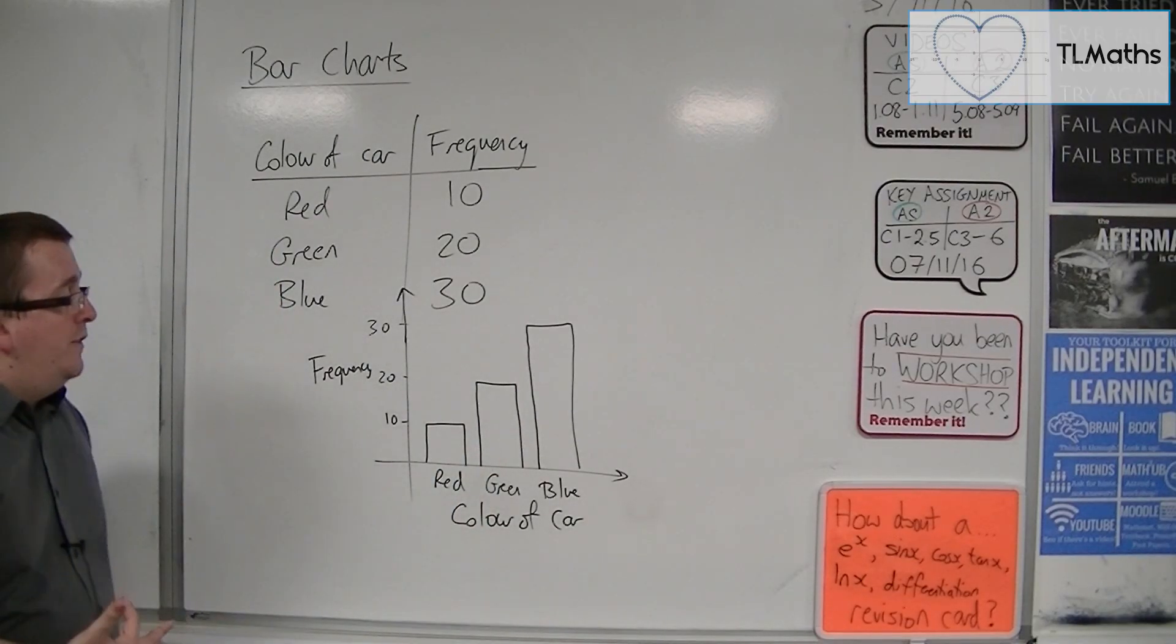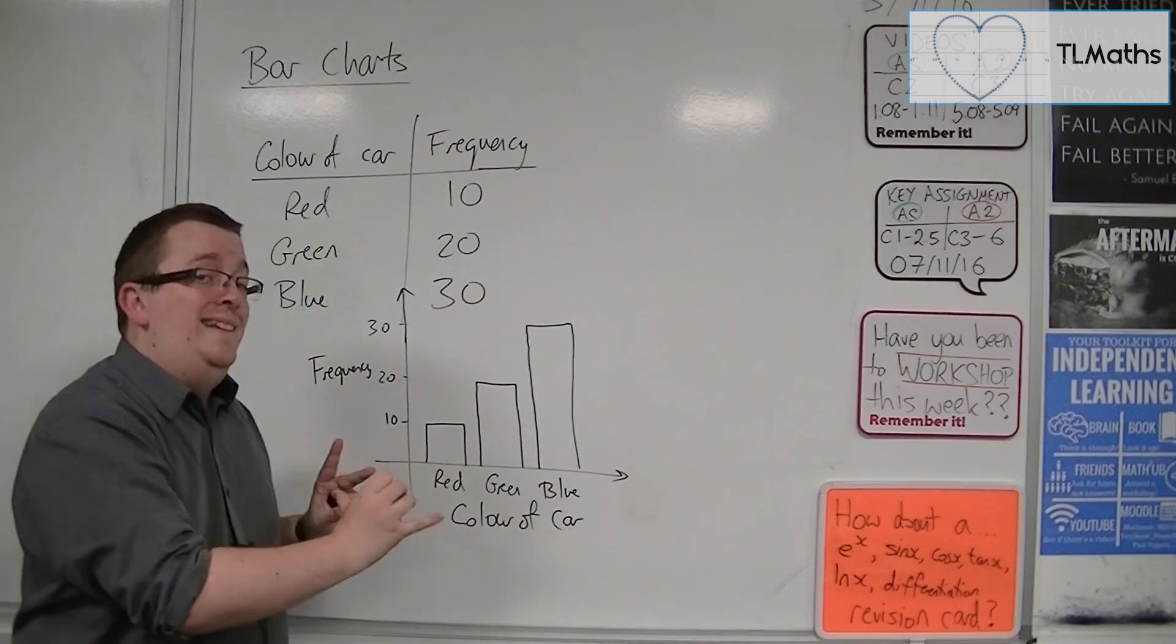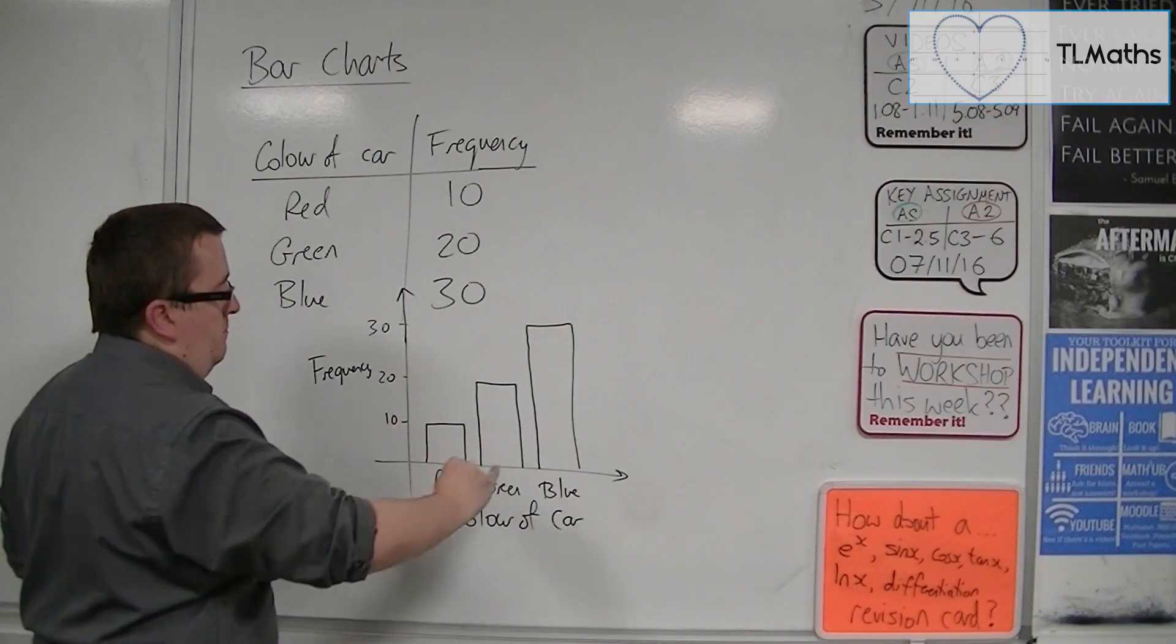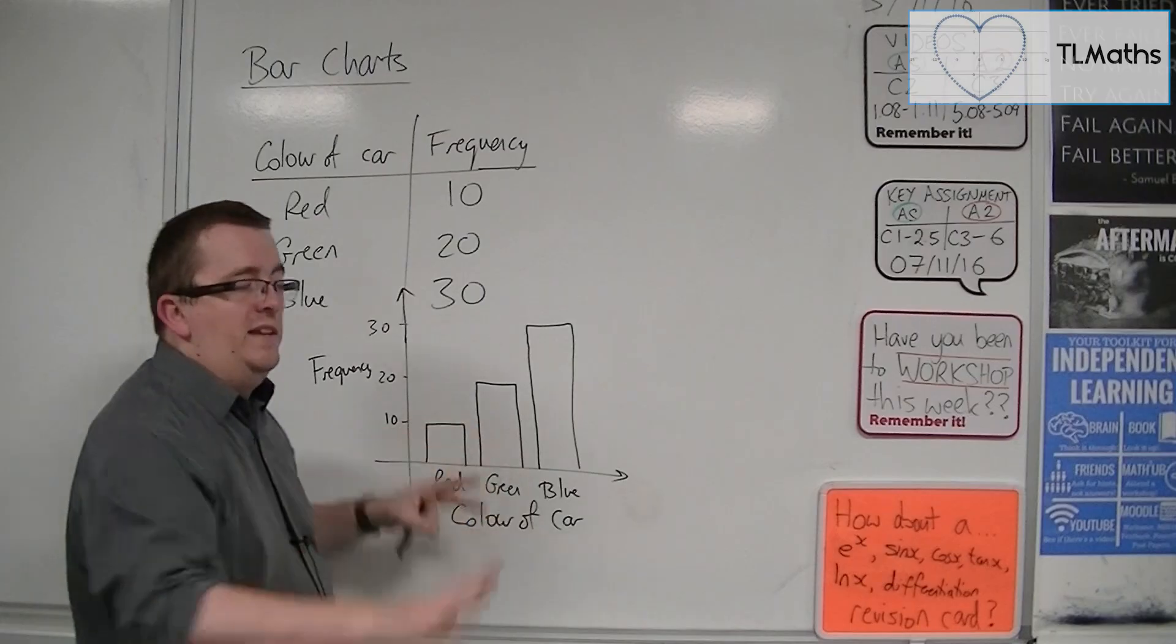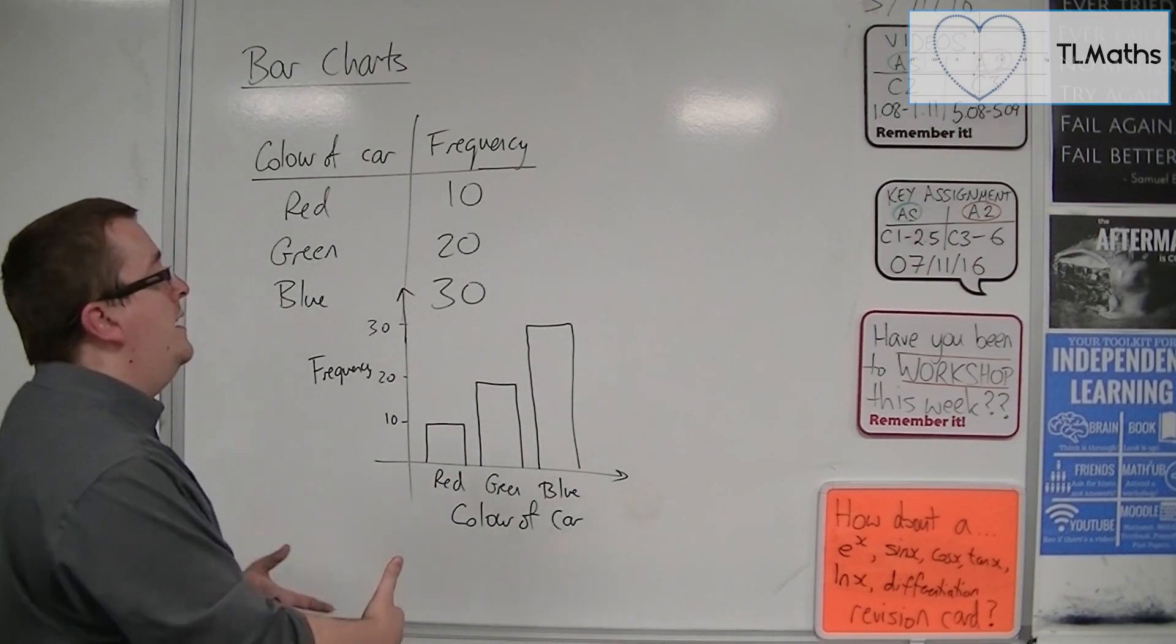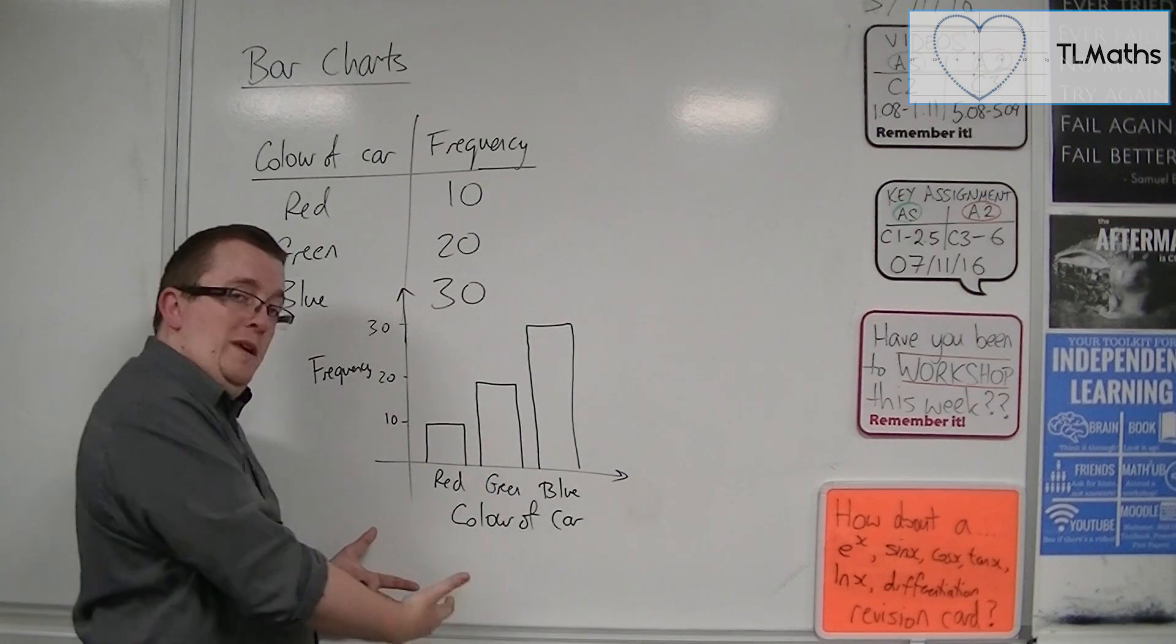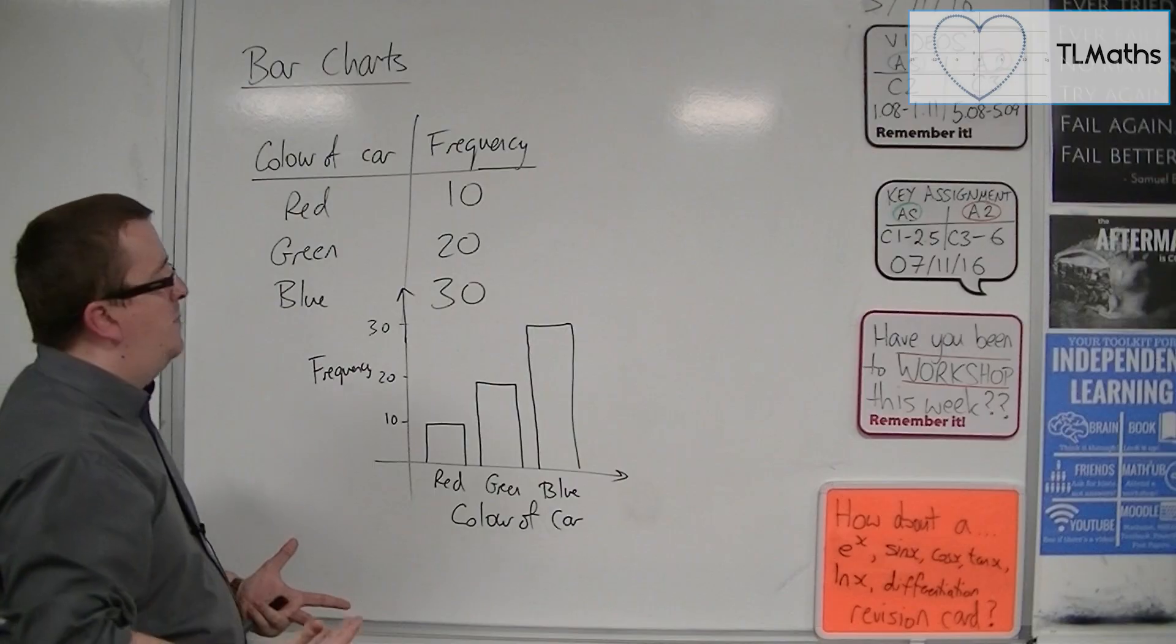There is a reason for that, because we want to draw them as separate entities, separate beings, if you like. I can't have red and green stuck next to each other. They are separate. And that is why we would refer to them as discrete. It is discrete data that we must work with bar charts.